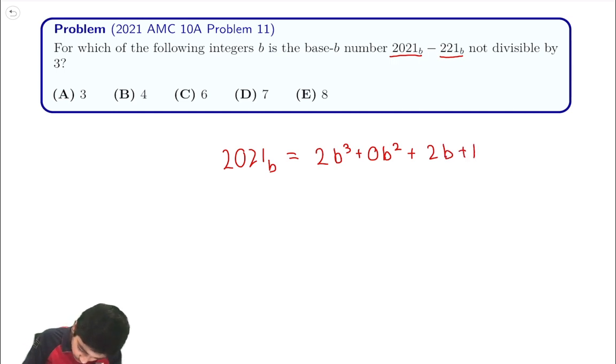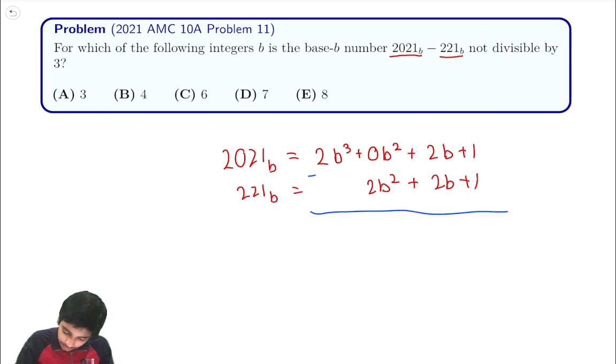We also have that 221 base b equals 2b squared plus 2b plus 1. Subtracting these two terms, the 2b and 1 terms cancel, so we get 2b cubed minus 2b squared.